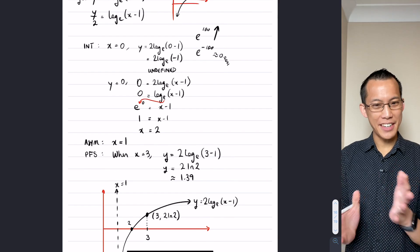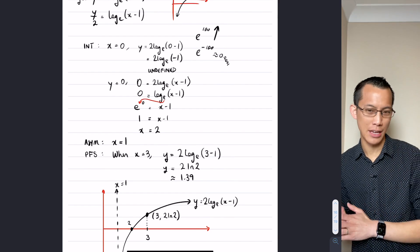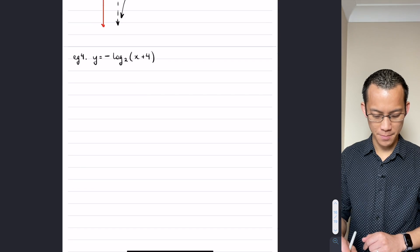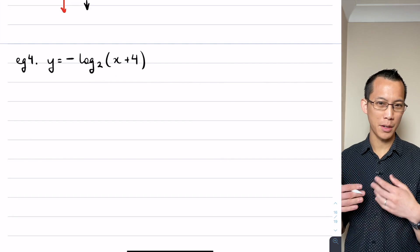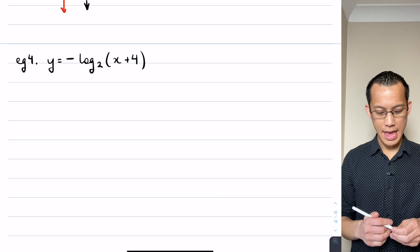Alright, so just remember again it's step by step. You go through each of these features and then you put them appropriately onto there. So here's the last example we're going to work through together, and then I'm going to set you the rest of the questions in the exercise.